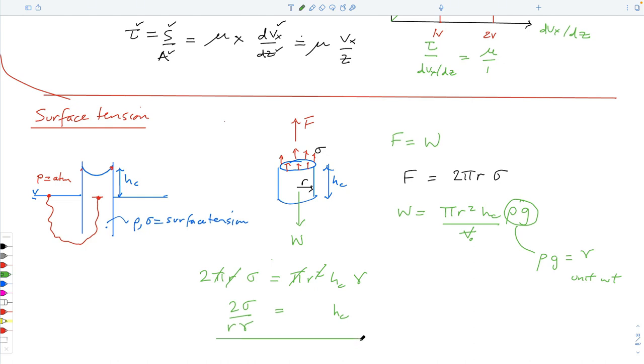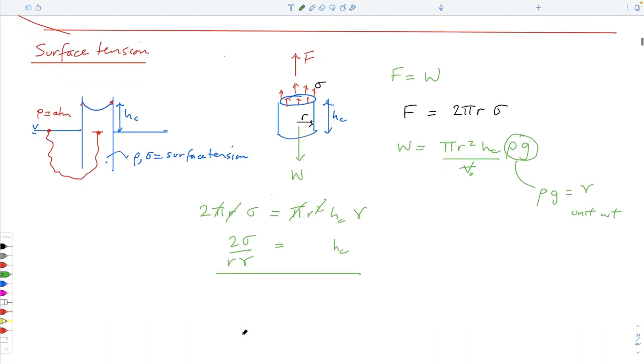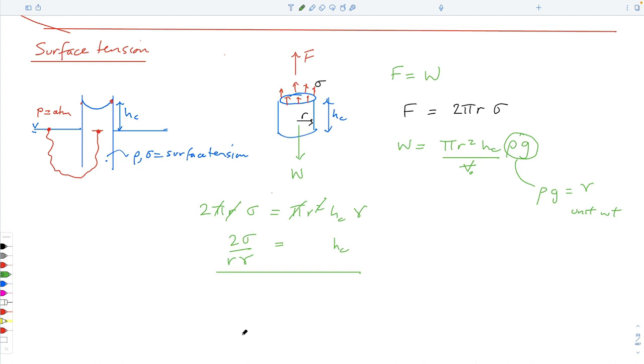And if you set these equal to each other, then you end up with 2 pi r sigma is equal to pi r r squared h sub c, I guess, gamma, gamma. And so if you get rid of some terms, we've got an r, we've got a couple of pi's. We're probably interested in this height. So we can write it as 2 times sigma over r gamma. Final result. So the height rise, if you have a larger surface tension, a larger affinity between the glass and the thing, it will rise higher. If you have a thinner capillary, it will be forced higher. And if you have a lighter fluid, it will be driven higher.